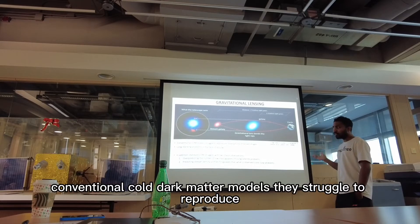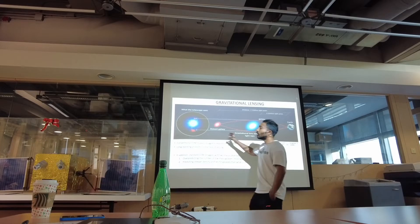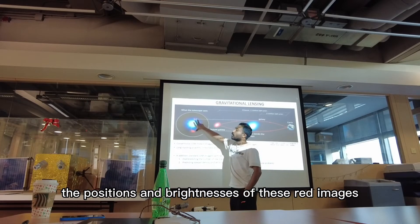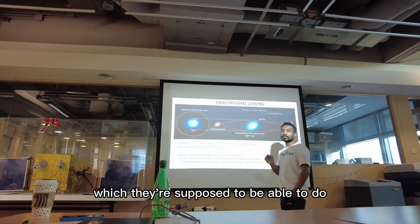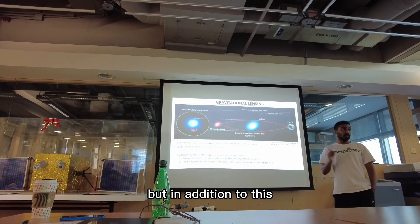So conventional cold dark matter models, they struggle to reproduce the positions and brightnesses of these red images, which they're supposed to be able to do. Now these are long-standing problems in the field of lensing.